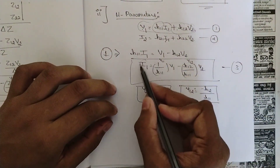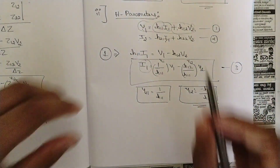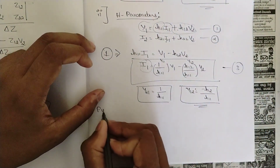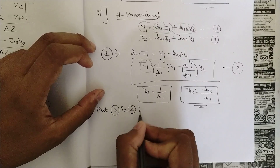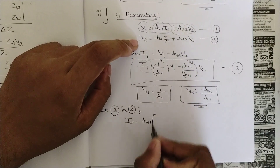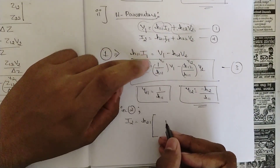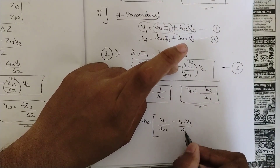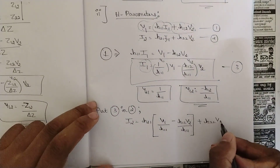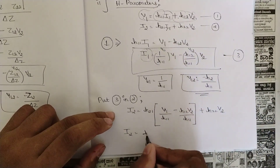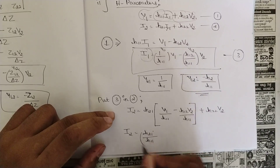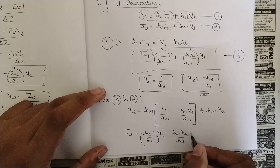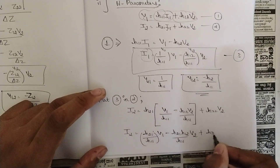Next step: substitute the value of I1 from equation 3 into equation 2, which we have not yet used. Equation 2 is: I2 = H21·I1 + H22·V2. Substituting I1: I2 = H21·(V1/H11 minus H12·V2/H11) + H22·V2. Multiplying out: I2 = (H21/H11)·V1 minus (H21·H12/H11)·V2 + H22·V2.